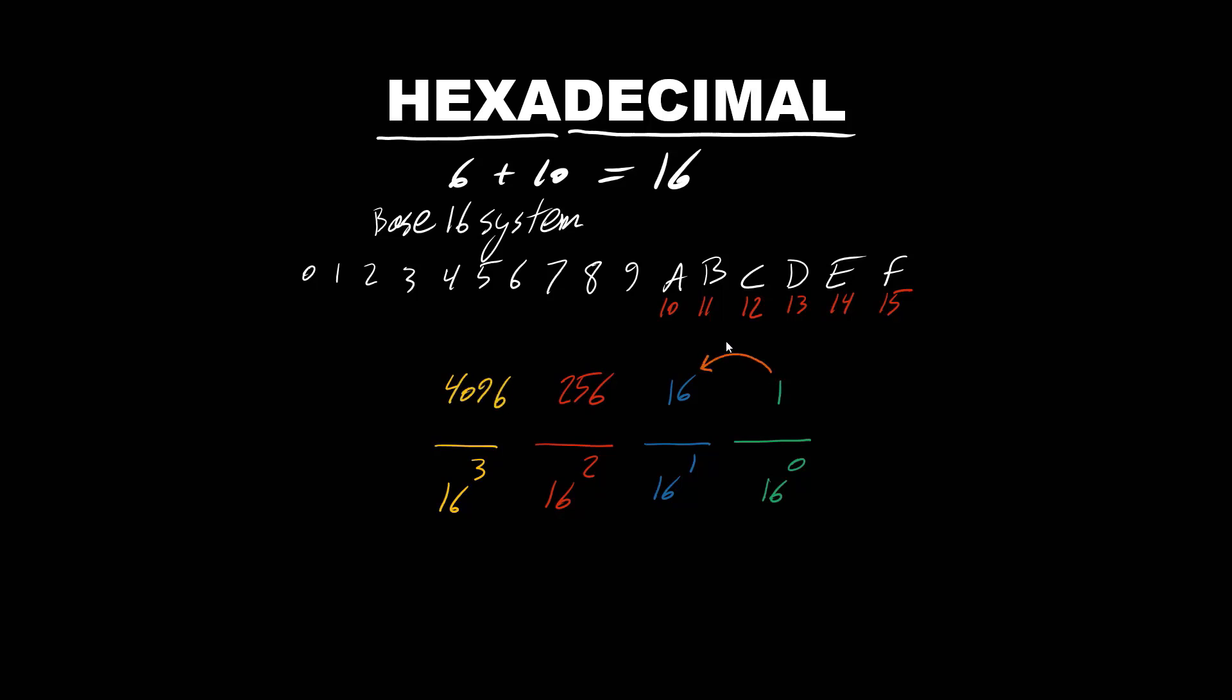In hexadecimal, every time we go to the left, we multiply by 16 to get the next place value. Why 16? Because hexadecimal is base 16 system.